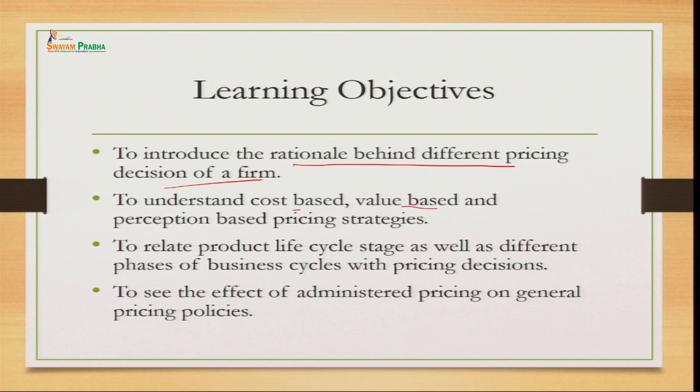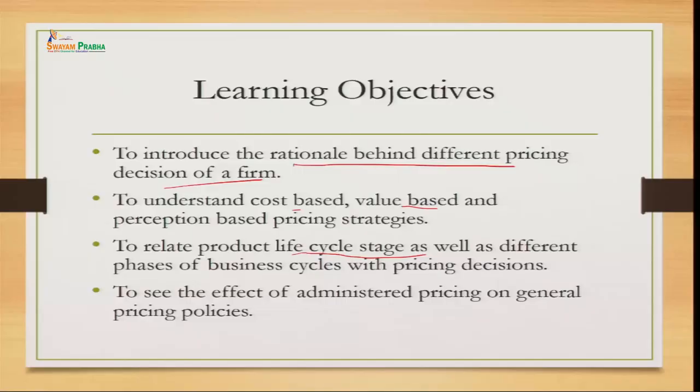We will also relate the product life stages and different phases of the business cycle with pricing decisions — what pricing strategies a producer should follow at different stages of a product's life, and what impact the expansion or contraction phases of the economy have on commodity pricing. Lastly, we will see the effect of administered pricing on the general pricing policy.